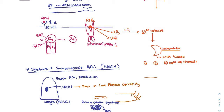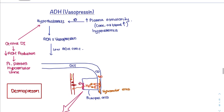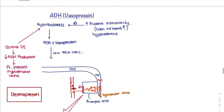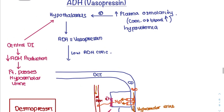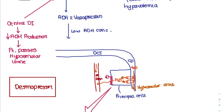When ectopic ADH is produced, blood vessels are filled with water, increasing blood pressure. In central diabetes insipidus, there is a decrease in ADH production from the hypothalamus, resulting in low ADH levels, and the patient will pass high volumes of hypo-osmolar urine.